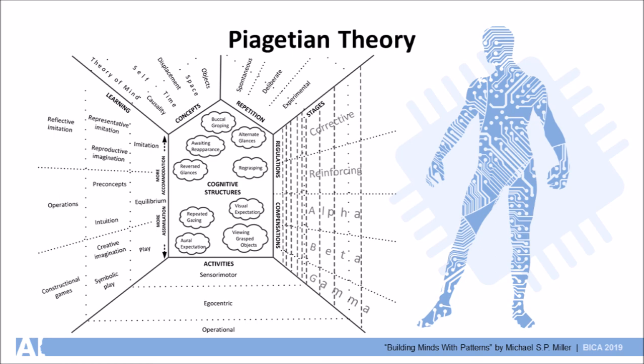Piaget saw repetition of behavior as the key to development. Piaget called them circular reactions or loops. He saw that loops first occurred spontaneously, then deliberately, and then eventually experimentally.